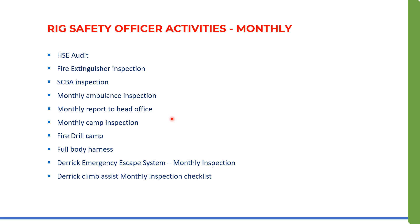The rig safety officer's monthly activities: number one is the HSE audit. Next is fire extinguisher inspection, which is done monthly. Then SCBA — self-contained breathing apparatus — inspection. Then monthly ambulance inspection. The rig safety officer also sends a monthly report to the head office. While daily reports go to the HSE coordinator and company man, this is a special report sent once a month to the head office.